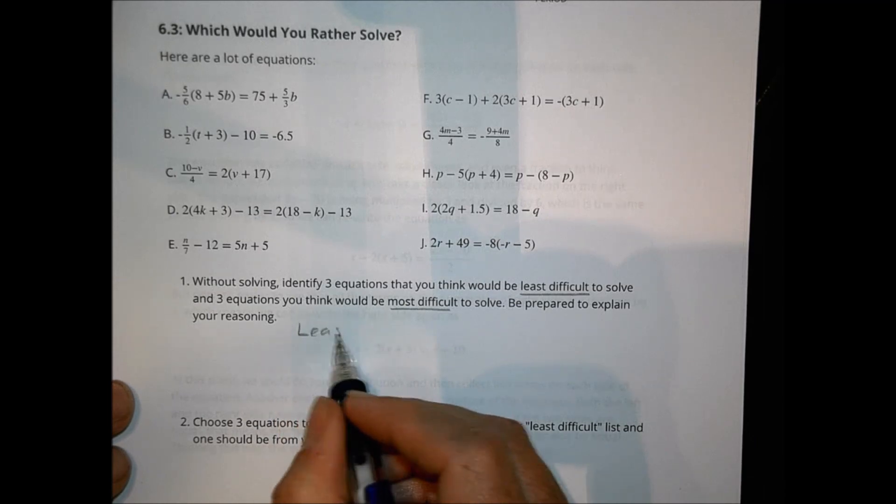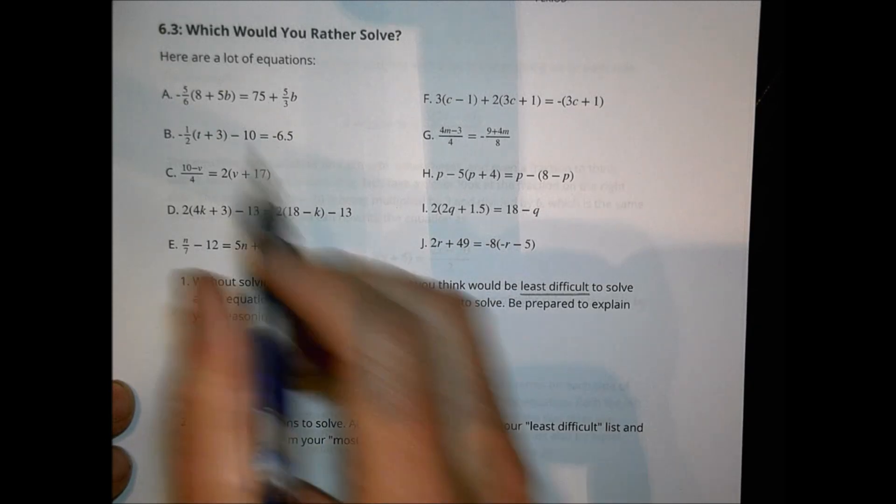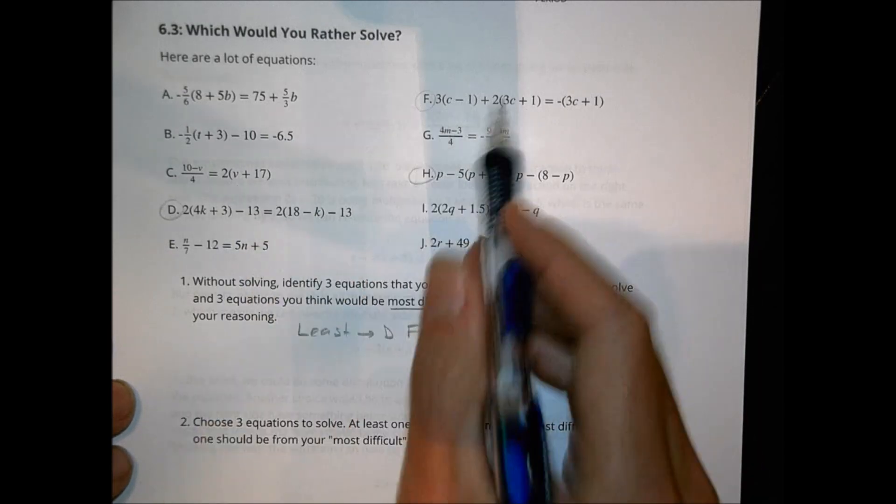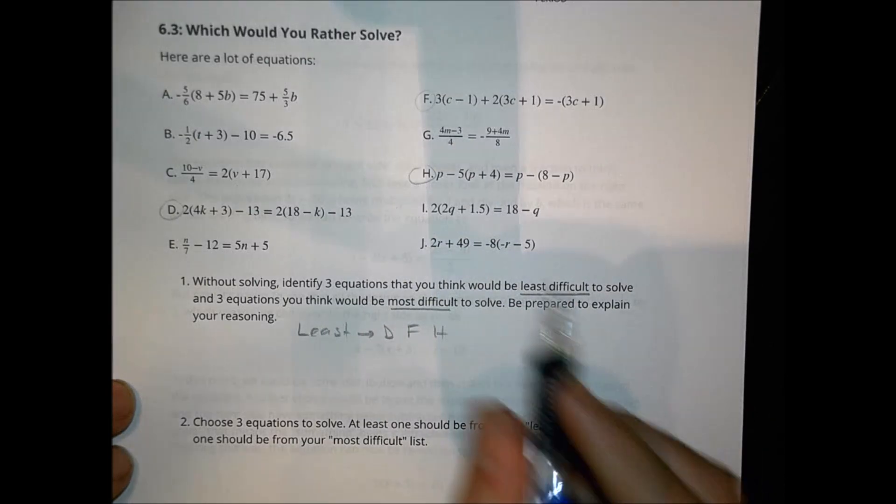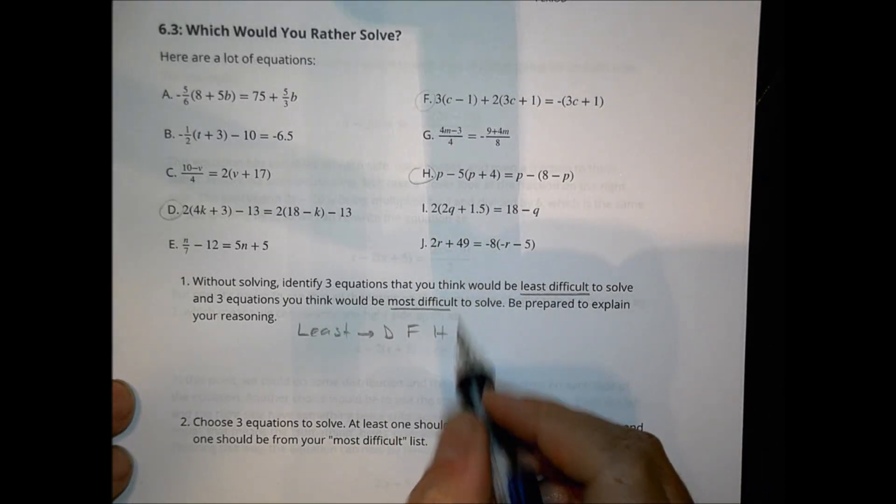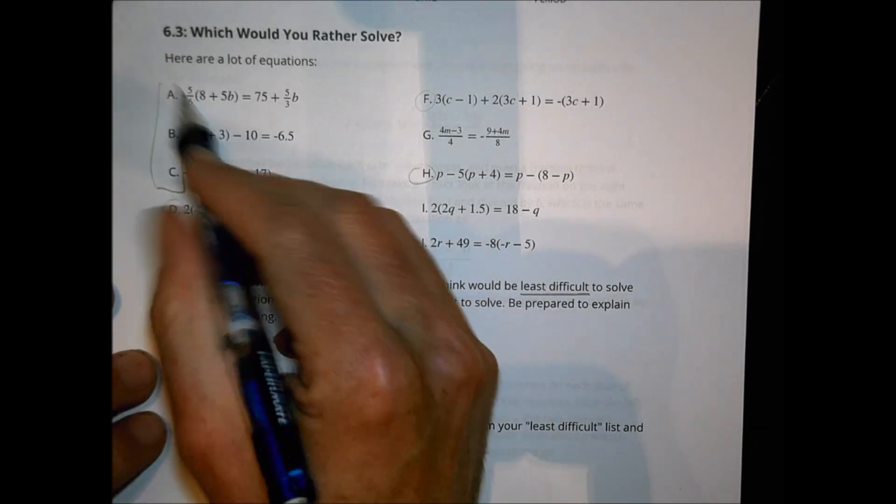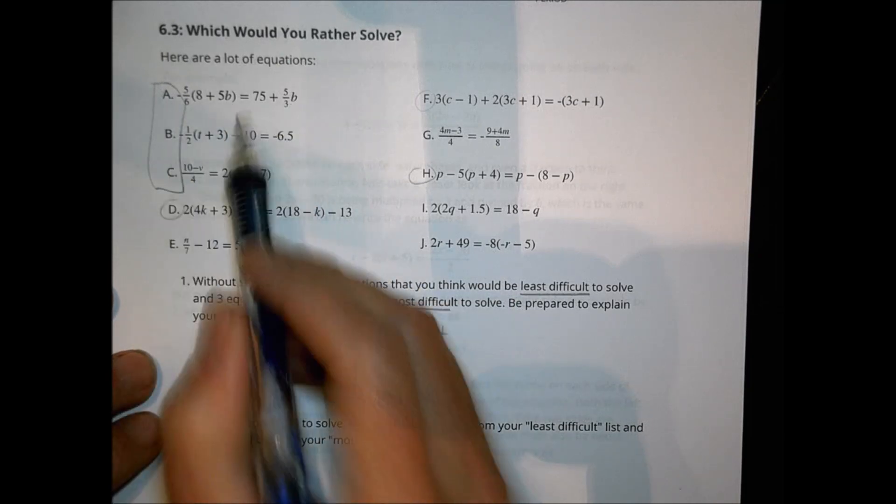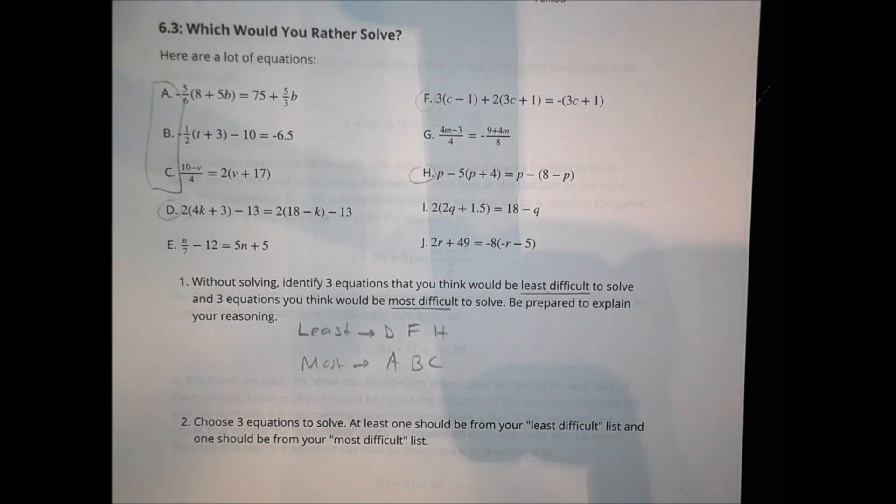And so I went ahead and selected three as the least difficult to solve, and I said, well, I think D, F, and H seem to be pretty easy to solve. And I thought that because there were no fractions, no decimals, just a little distributing, and you should be pretty good to go. J looks probably the easiest. In terms of the most difficult to solve, I might say something like A, B, and C all look like they require some work. I have some fractions here, some decimals there. That's going to take some effort to get those ones solved more than just the simple ones there.